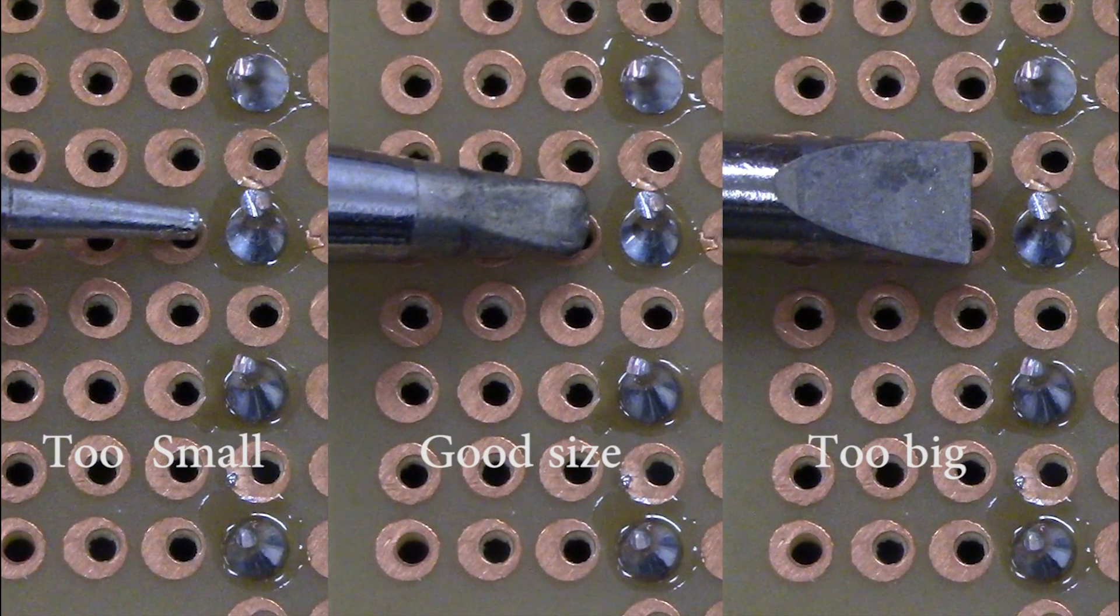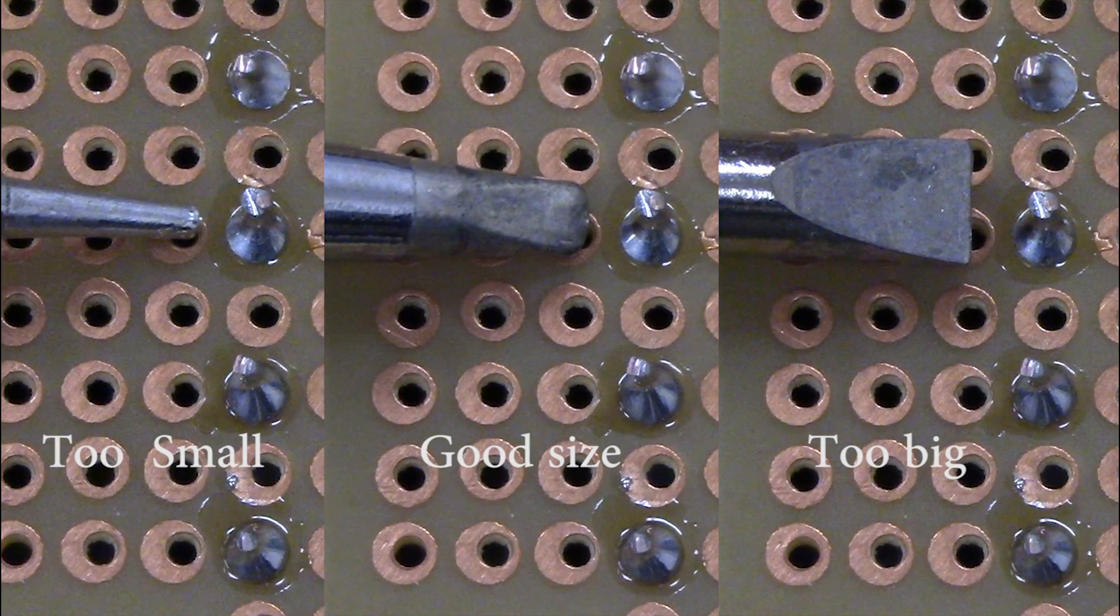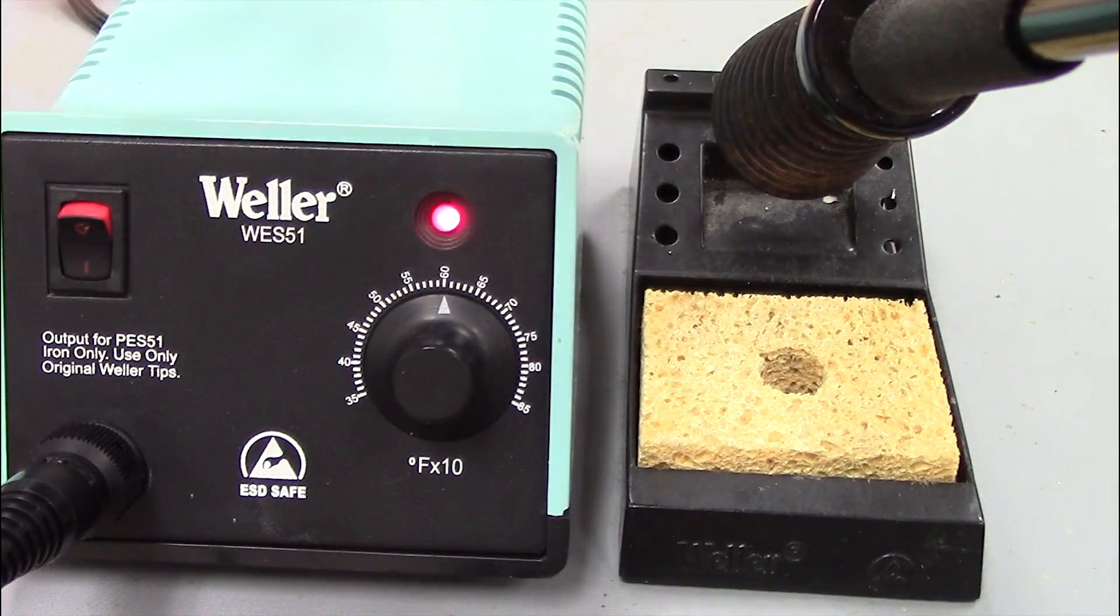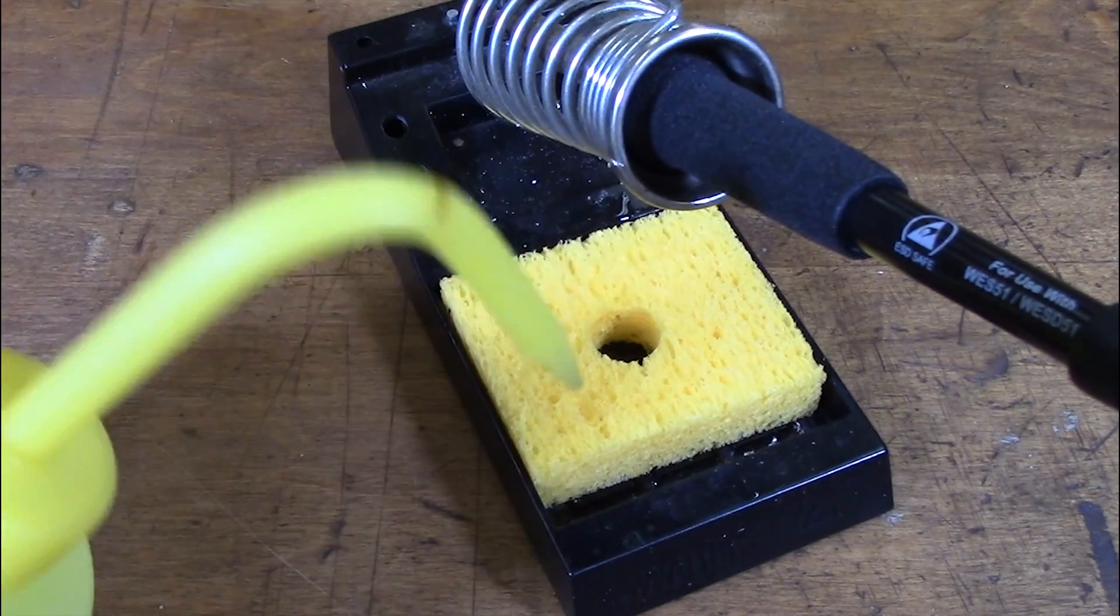Ensure the soldering iron tip size is about the size of the pad you plan to desolder. Turn the soldering iron on to 600 degrees Fahrenheit for leaded solder and 700 for lead-free solder. Dampen the sponge with distilled water.